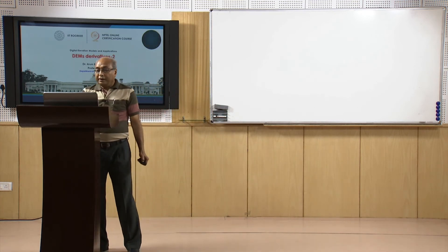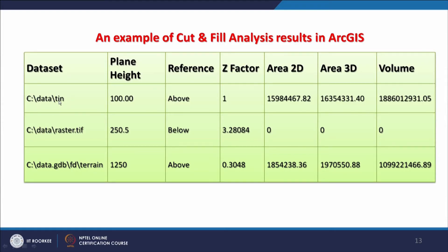Here is an example of cut and fill analysis results in ArcGIS, showing a TIN example, a raster example, and different plane heights given above or below. The Z factor is changed accordingly — Z factor 1 means horizontal and vertical axes are the same. Area in 2D, 3D, and volume are all calculated. When plane height is changed to 1250, the 2D area, 3D area, and volume all change. Likewise, if the reference plane or Z factor is changed, all values change.